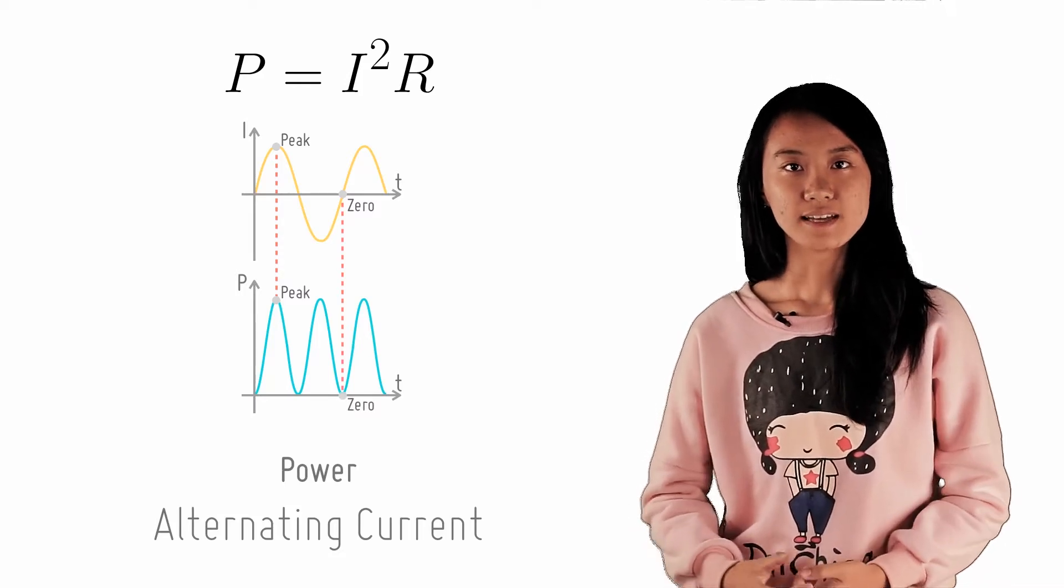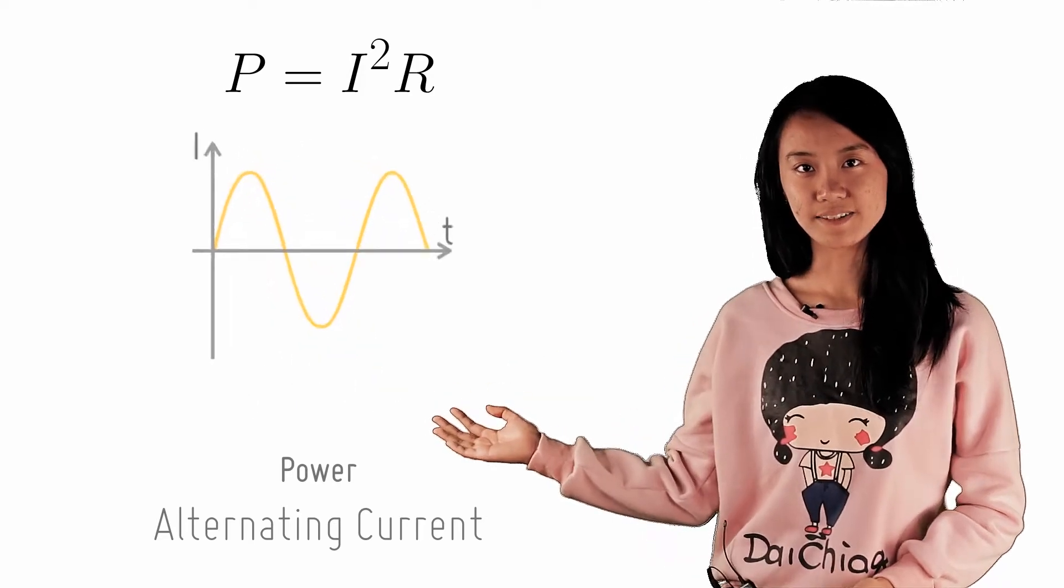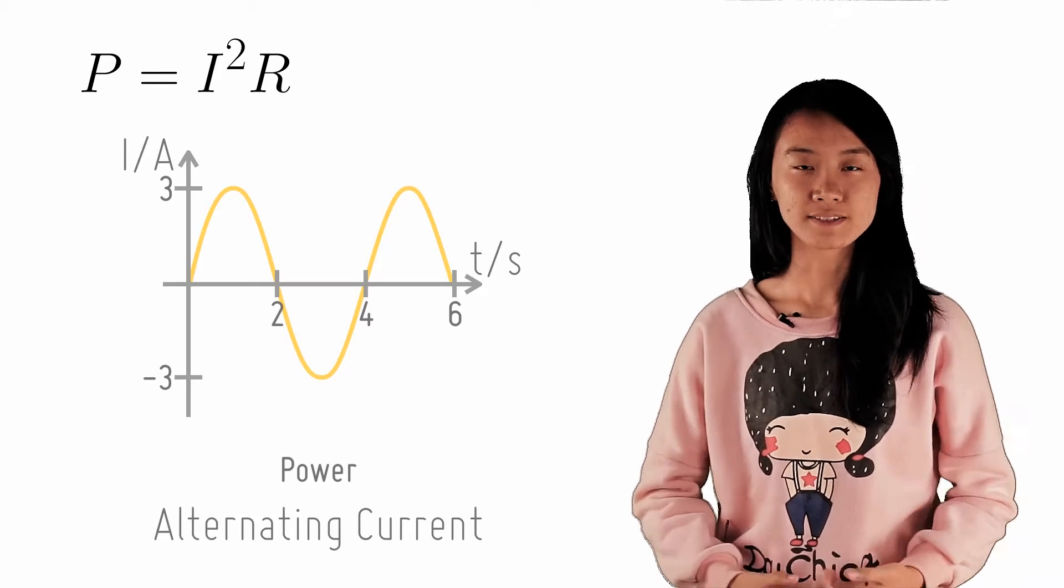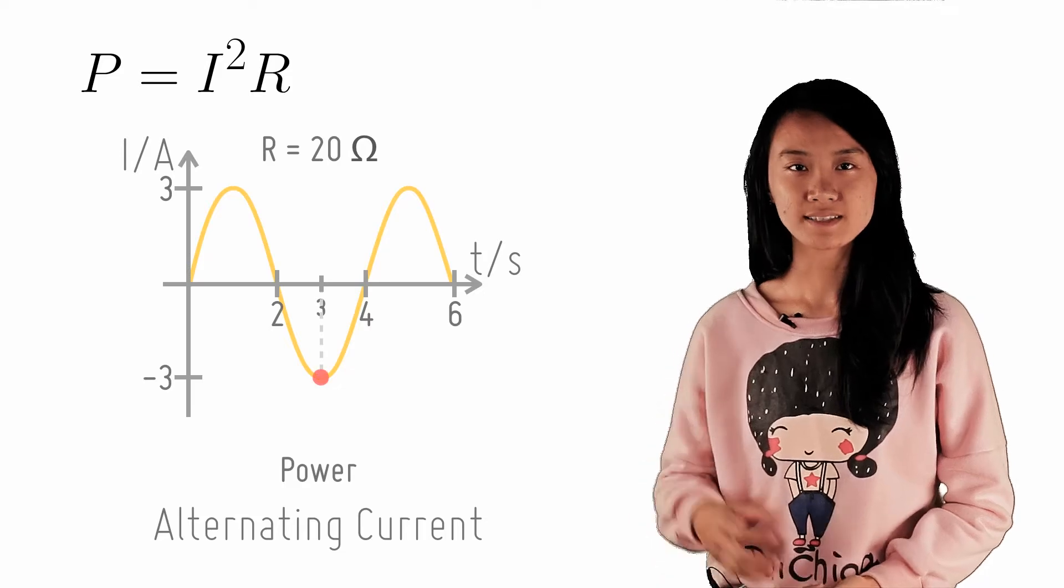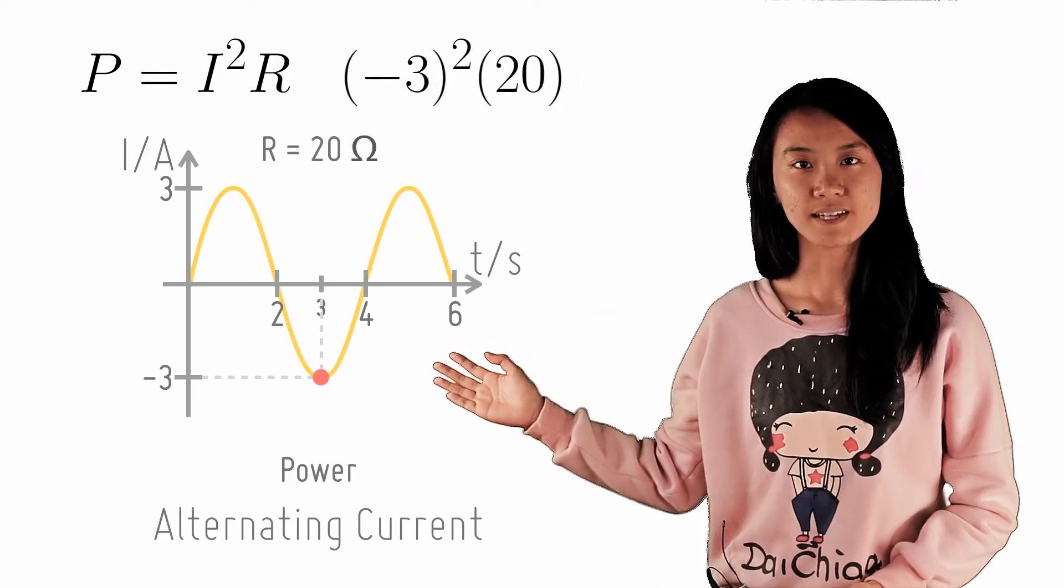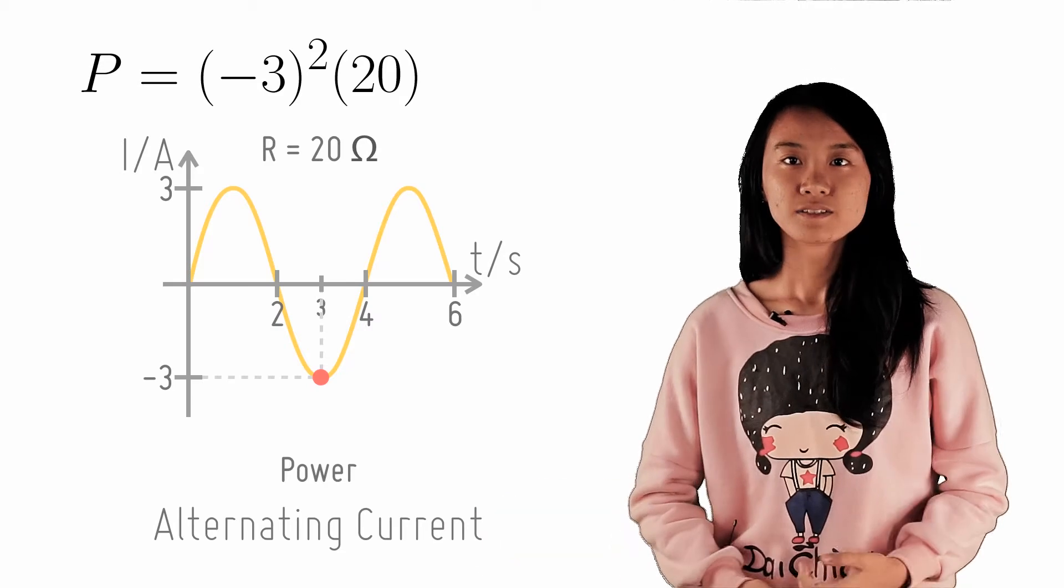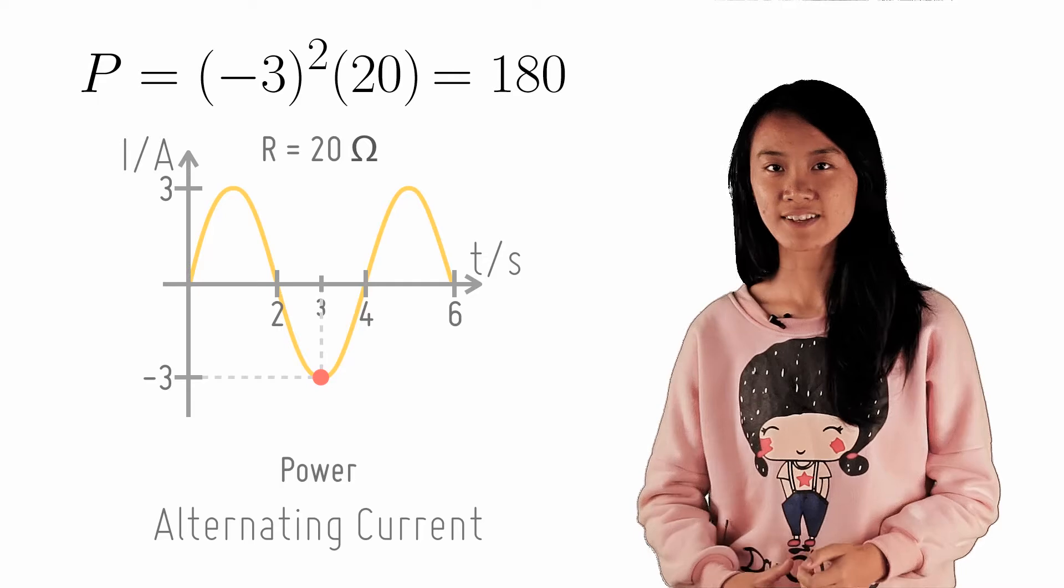Now let's look at a numerical example. Look at this graph of an AC here. Given the resistance of the component is 20 ohms, can you find the power output at T equals 3 seconds? To find the power output, we take the current at this time, negative 3 ampere, square it and multiply by the resistance of 20 ohms. So the power output at this time is negative 3 squared times 20, which is 180 watts.